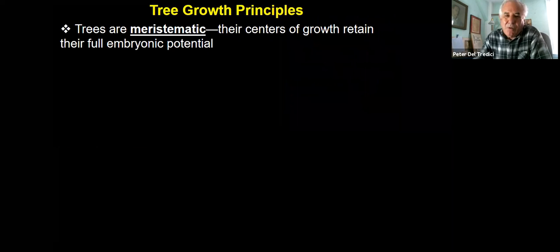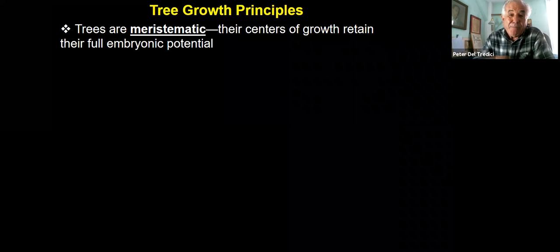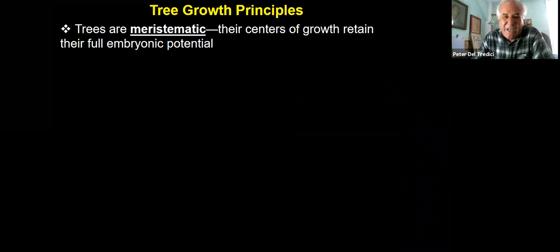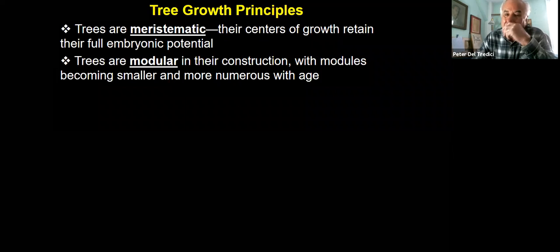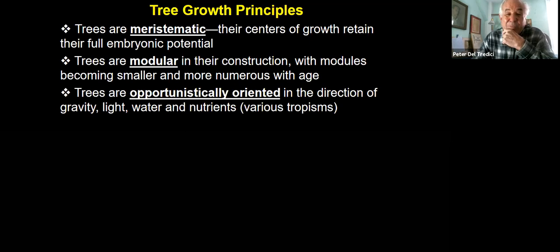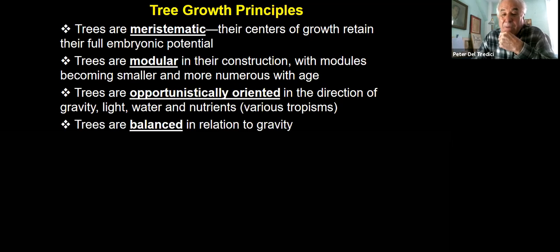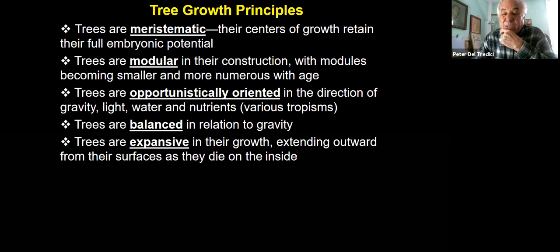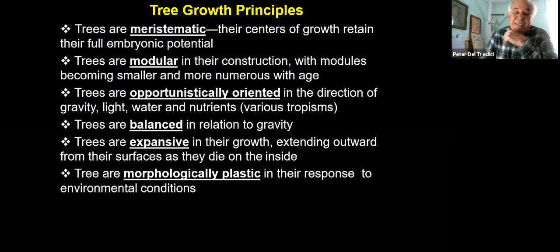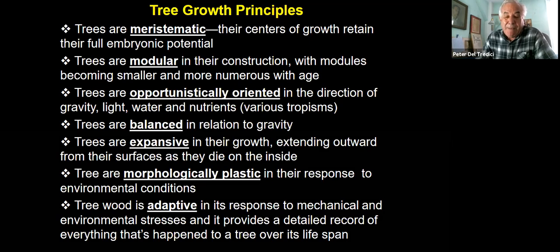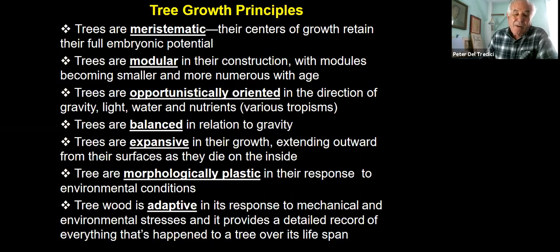To review the basic principles of tree growth: they're meristematic — they retain their full embryonic potential. They're modular in their construction. They're opportunistically oriented in the direction of gravity, light, water, and nutrients. They're balanced in relation to gravity and expansive in their growth, always expanding outward. They die from the inside. They're morphologically plastic in their response to environmental conditions. And tree wood is adaptive in its response to mechanical and environmental stress — it provides a detailed record of everything that's ever happened to a tree over its lifespan.